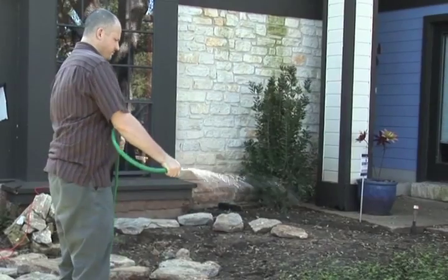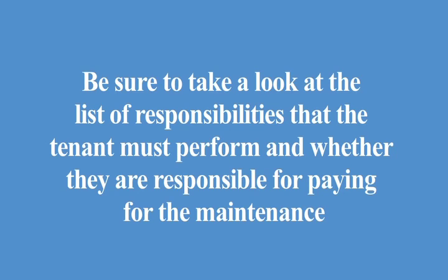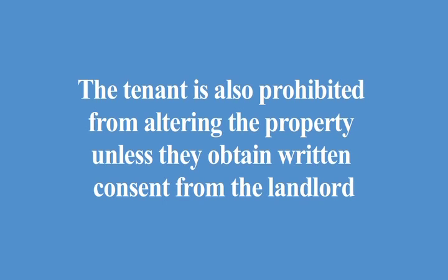Paragraph 17, Property Maintenance. This paragraph explains the tenant's responsibilities in maintaining the property. Maintenance will extend to yard maintenance and to pool or spa maintenance, if applicable. Be sure to review the list of responsibilities the tenant must perform and whether they are responsible for paying for the maintenance. The specific responsibilities for any pool or spa are covered in a separate addendum, which is TAR Form 2010. The tenant is also prohibited from altering the property unless they obtain written consent from the landlord. If the tenant fails to maintain the property as required, the landlord may perform these activities but the tenant will be required to reimburse the landlord for reasonable expenses. Other remedies the landlord may exercise will be discussed in paragraph 27. Finally, this paragraph indicates whether smoking is permitted on the property, and if smoking is not allowed but does occur, the landlord is entitled to certain remedies discussed in this paragraph.